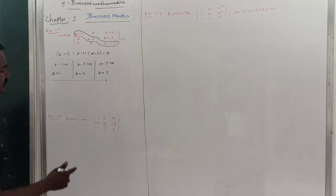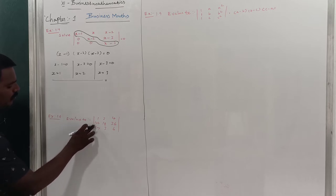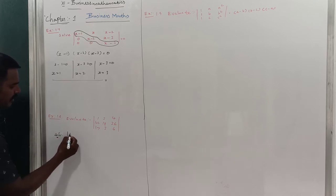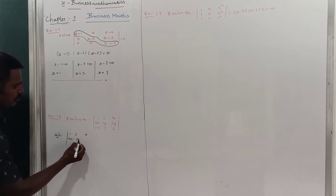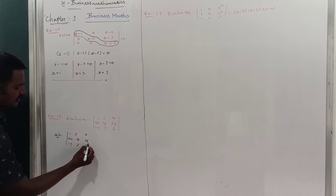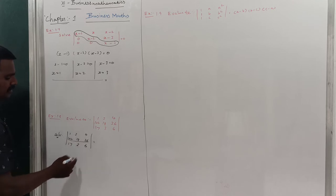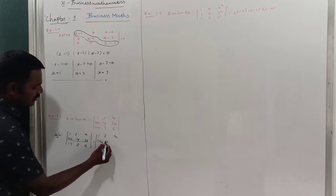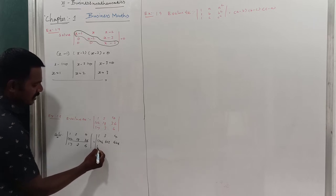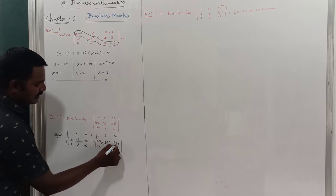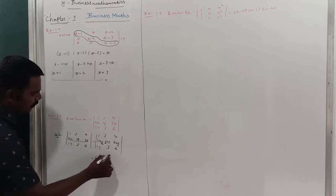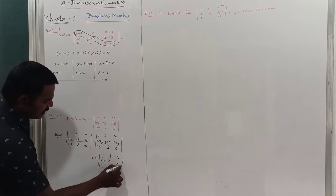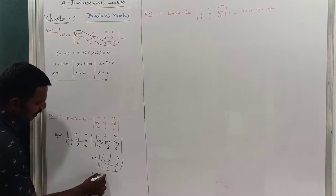The next problem: evaluate the determinant of the matrix [1, 2, 3; 1, 3, 4; 1, 0, 2; 18, 36, 17; 3, 6] — actually a 3×3 matrix. Taking out 6 as a common factor from the second row gives 6 × [1, 3, 4; 17, 3, 6; 17, 3, 6]. Now two rows are identical, so the value of the determinant is 0.